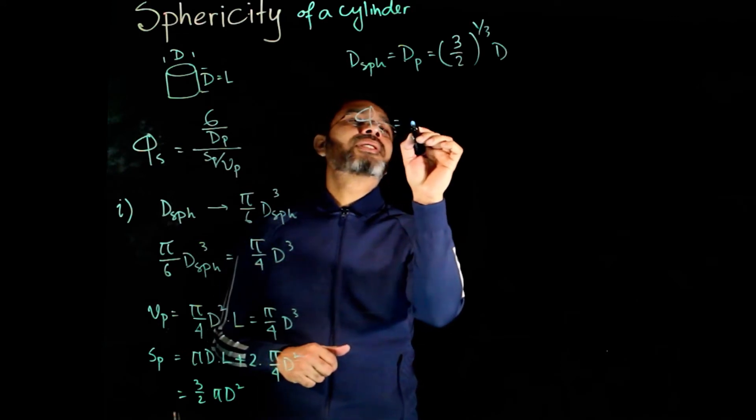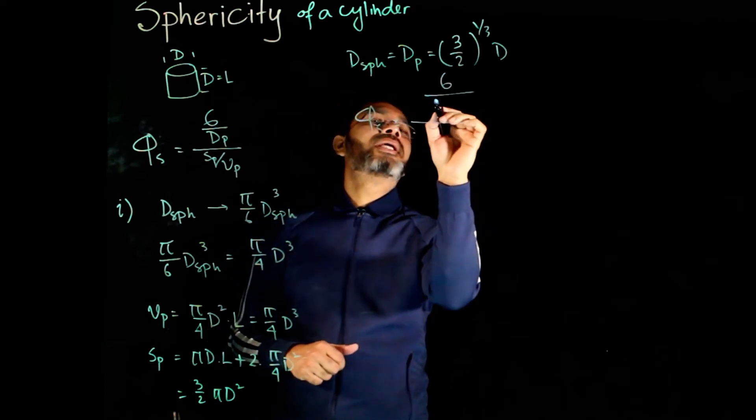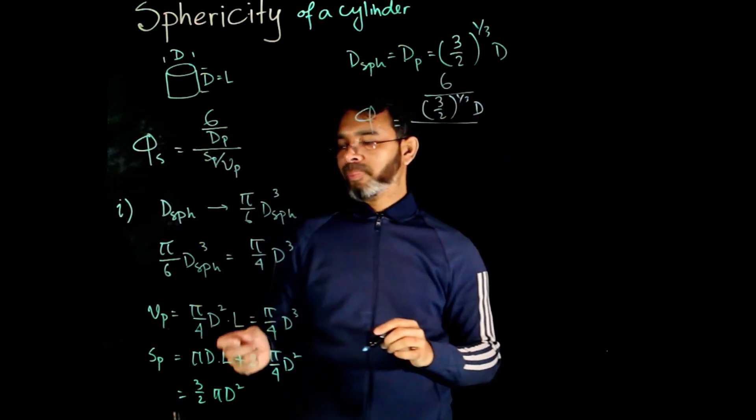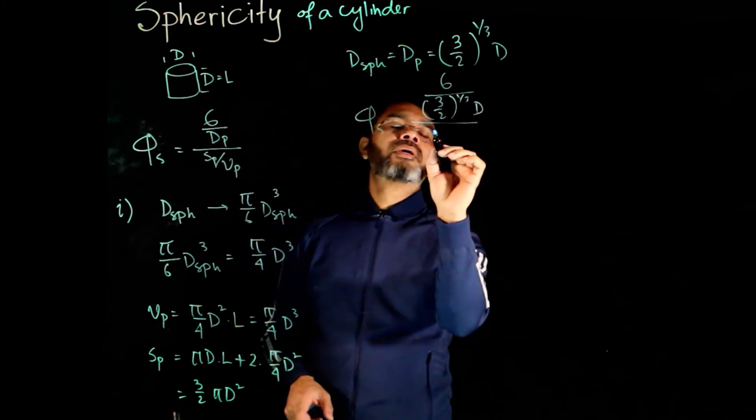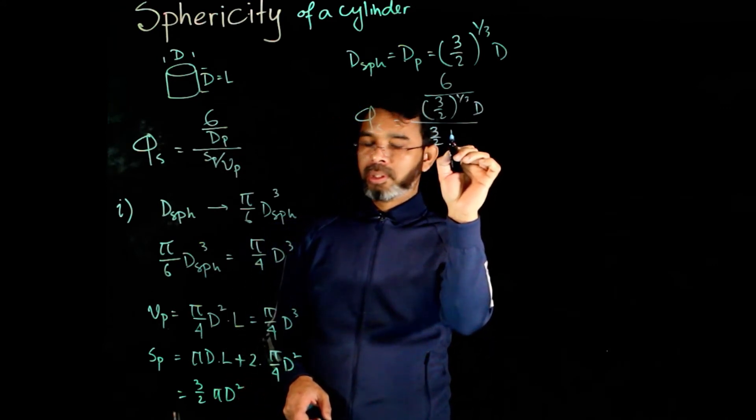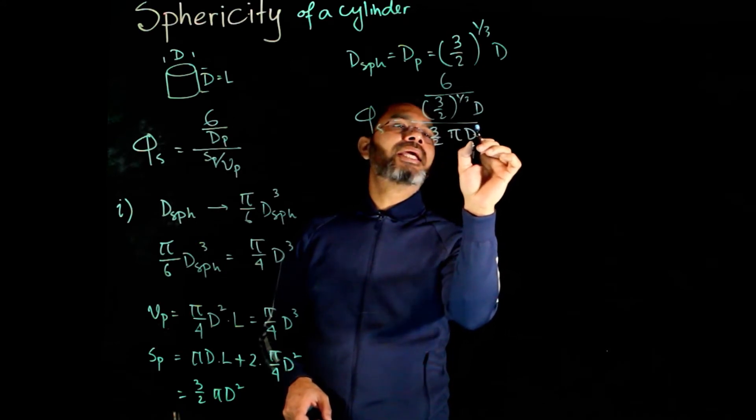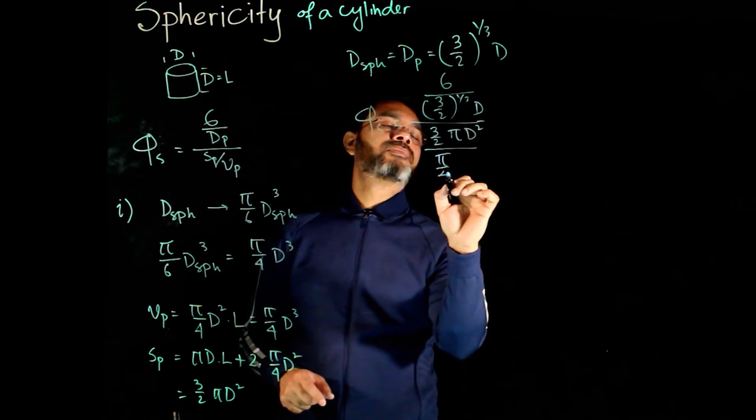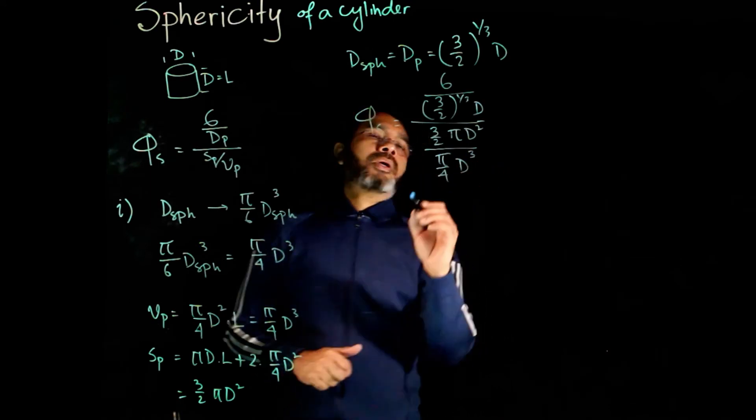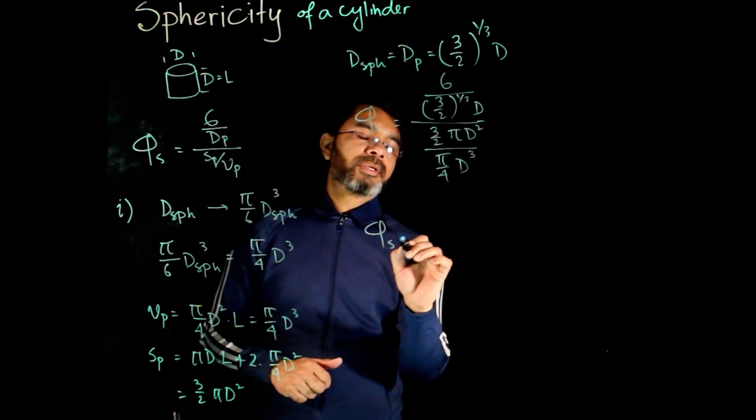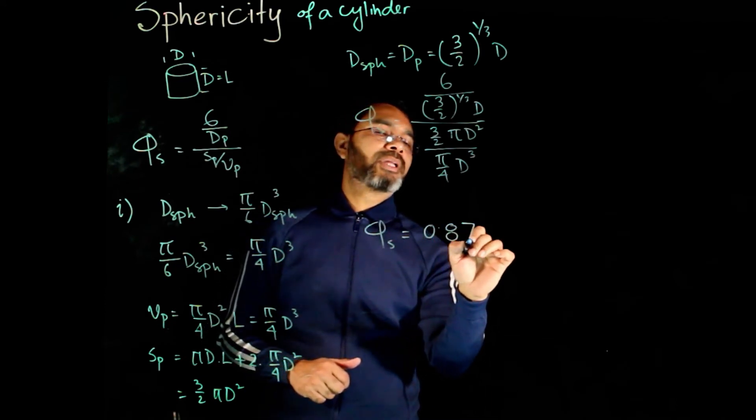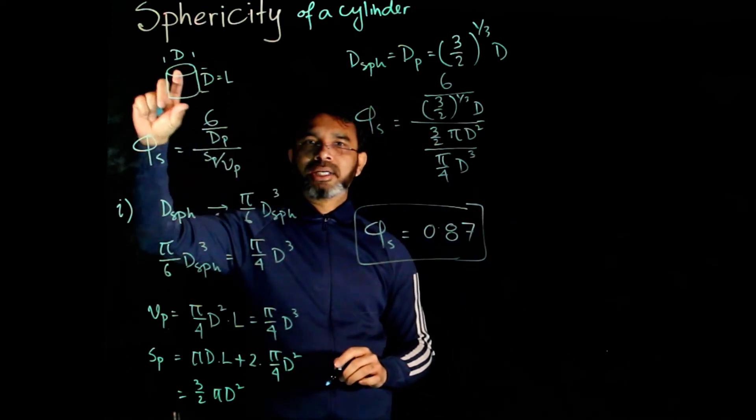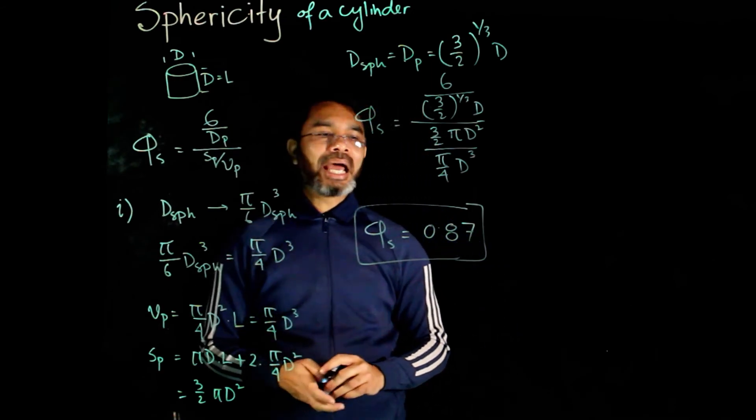So, you get sphericity equals 6 over this 3 over 2 d and then sp is 3 over 2 pi d squared over the volume pi over 4 d cube. If you do further simplification, you will get something like 0.87 for the short cylinder with length equals the diameter of the cylinder.